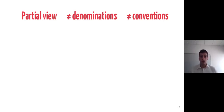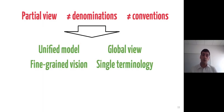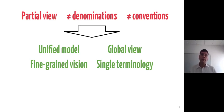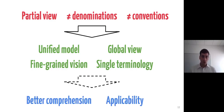Our goal with this contribution is to remove this limitation by proposing a unified model allowing a global fine-grained view of the existing anomalies in the Linux build system at the three levels using a single terminology. This model defines necessary and sufficient properties to cover and extend work on anomalies from the state of the art, with the objective of allowing a better comprehension for both academics and kernel practitioners, and also improving its applicability to other build systems.